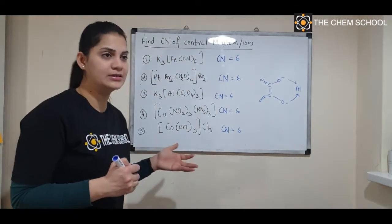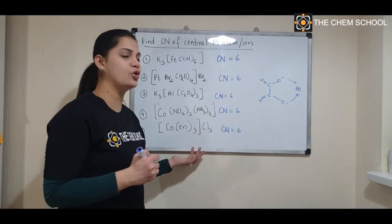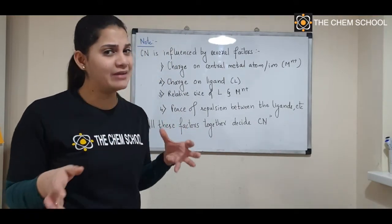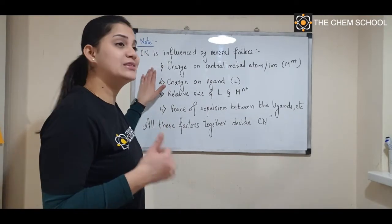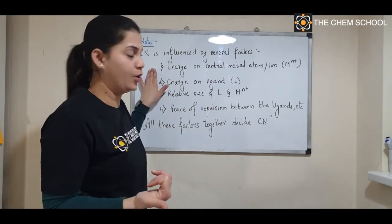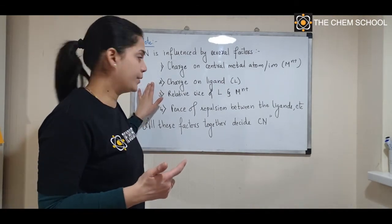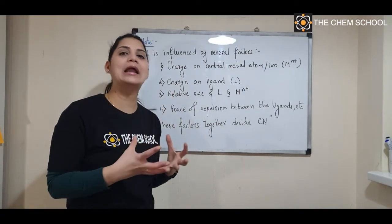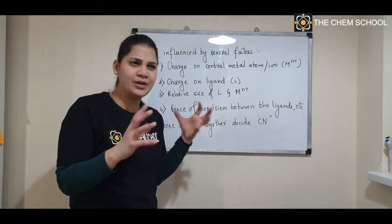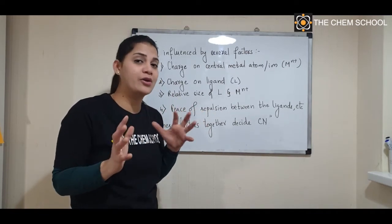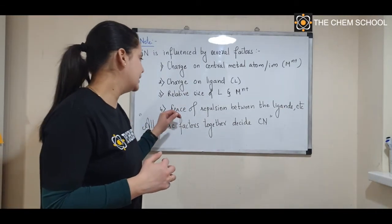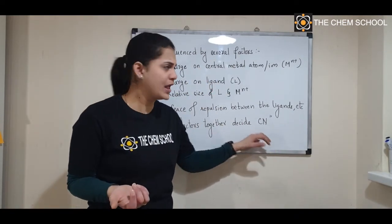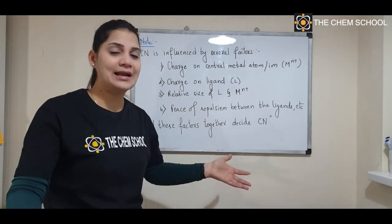Now let's talk about what influences the coordination number. Coordination number is influenced by several factors: the charge on the central metal atom or ion, the charge on the ligand, the relative size of the ligand and the metal — which determines the electronic cloud around the central metal atom — and the forces of repulsion between the ligands. All these together decide the coordination number.